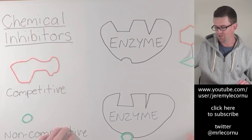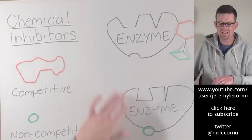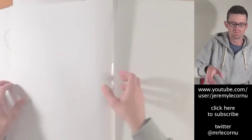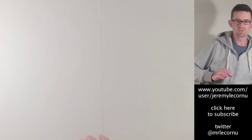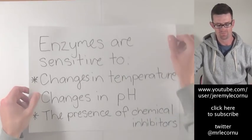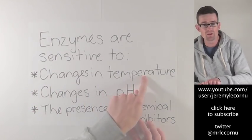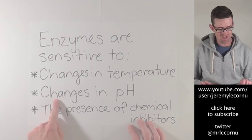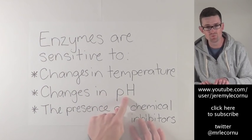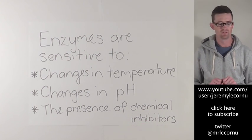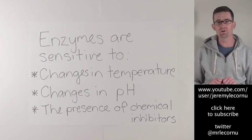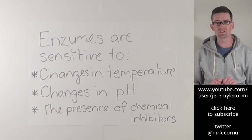To summarise: there are three factors that influence enzyme activity — changes in temperature, changes in pH level, and the presence of chemical inhibitors.